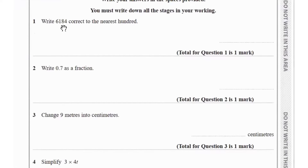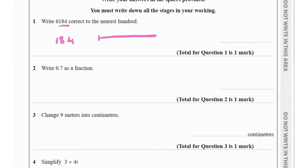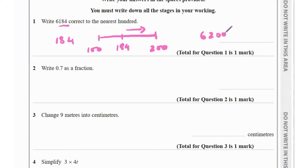The first question says write 6,184 correct to the nearest 100. To round to the nearest 100, we look at the digits. 100 is basically the 184 part of 6,184. If we draw a number line from 100 to 200, 184 is nearer to 200, so 6,184 rounded to the nearest 100 is 6,200.